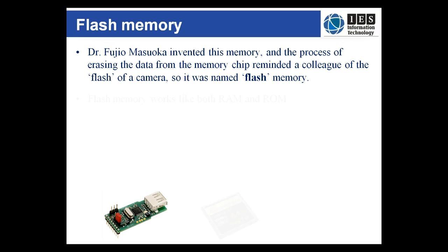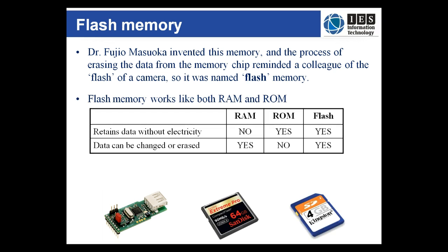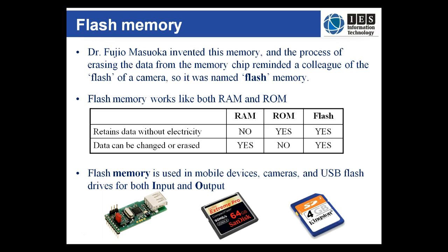Flash memory is used in many mobile devices, cameras and USB drives on a day-to-day basis, because flash memory can work like both RAM and ROM. It will retain its data without electricity and the data can be changed or erased. So in devices where the speed of processing is less important than space, having one device that can perform the roles of storage and processing is clearly an advantage.